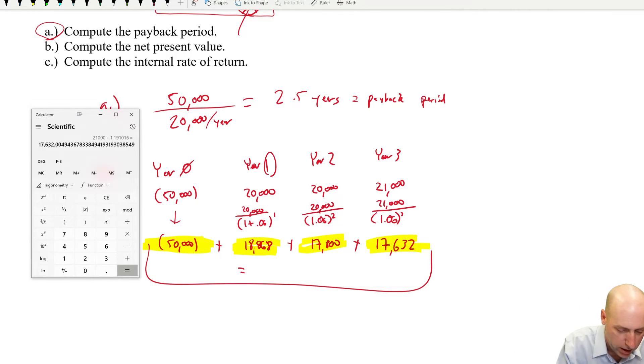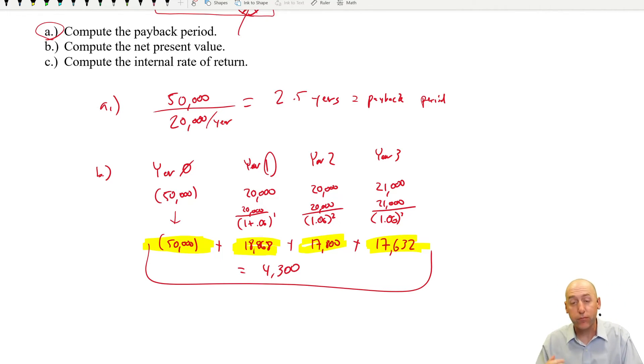All I do now is add them all together. This plus this plus this plus this equals a number. Negative 50,000 plus 18,868 plus 17,800 plus 17,632 equals $4,300. There is the present value of this investment. So if it creates a positive present value, the theory goes, you should do it. It's $4,300 more in your pocket after considering the time value of money, the present value of that discount rate. So 4,300 positive, this would be something that we should at least consider investing in.